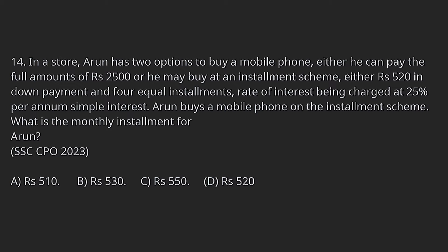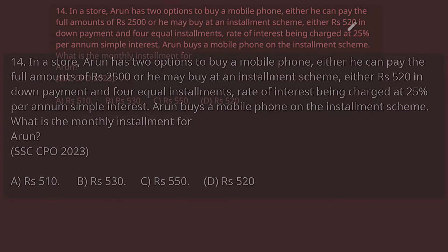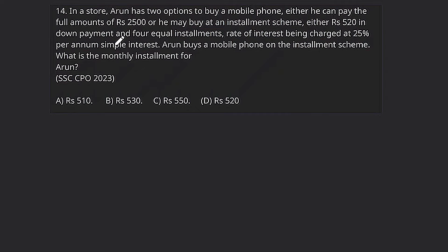In a store, Arun has two options to buy a mobile phone. Either he can pay the full amount of Rs.2500 in cash, or he may buy on an installment scheme with Rs.520 as down payment and 4 equal installments. The rate of interest is charged at 25% per annum. Arun buys the mobile phone on the installment scheme. What is the monthly installment for Arun?